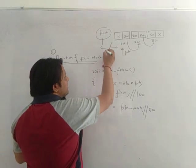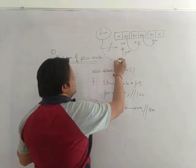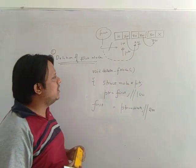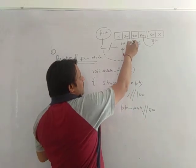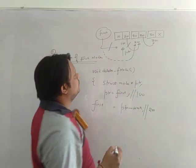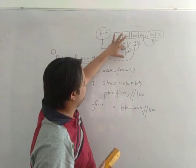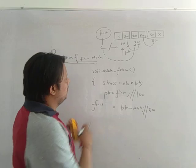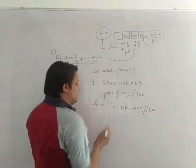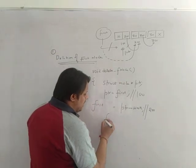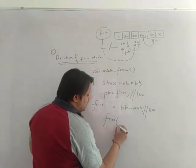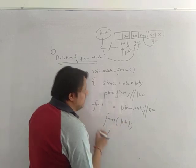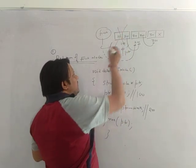After this line, first is now pointing to 200, and the connection to the old first node breaks. Now you have to delete that node at address 100, which is your ptr. For deletion you use free, so you write free(ptr). This will delete the first node.